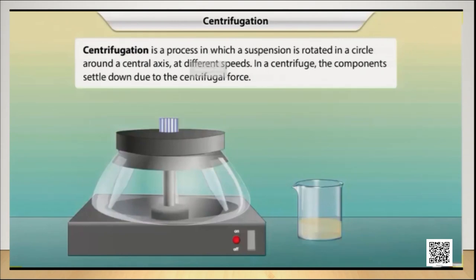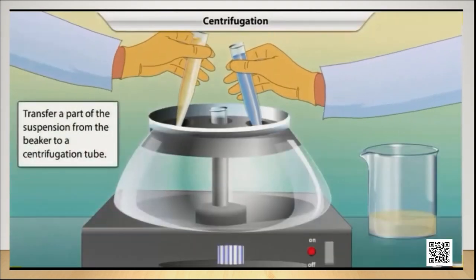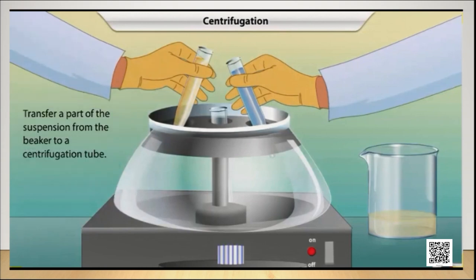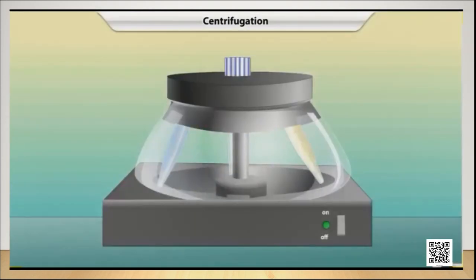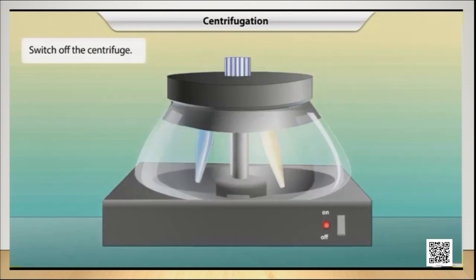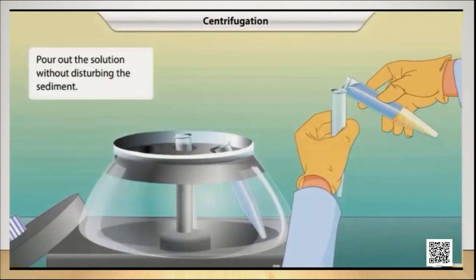Centrifugation is a process in which a suspension is rotated in a circle around a central axis at different speeds. In a centrifuge, the components settle down due to the centrifugal force. Here is a beaker containing a mixture of chalk powder and water. Transfer part of the mixture into a centrifugation tube. Switch on the centrifuge to allow the tubes to spin for a few minutes. The largest and heaviest materials sediment at the bottom, and the solution at the top — called the supernatant — can be poured out without disturbing the sediment.